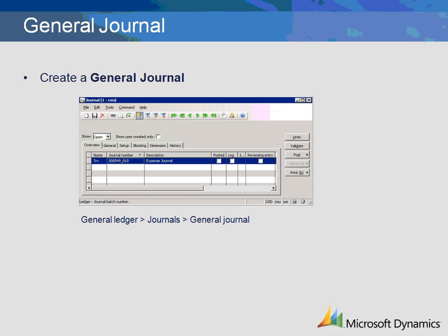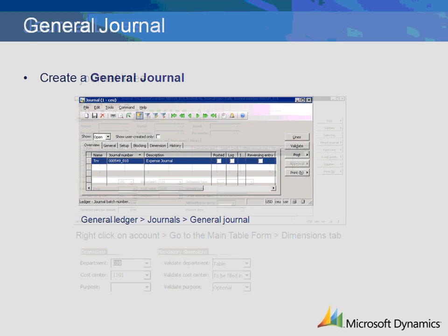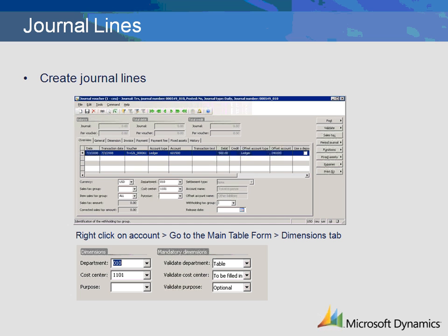We have created a new General Journal and click on the Lines button to enter the details of the first transaction. We have entered a transaction to record travel expense. The travel expense account 601500 has default dimensions specified in the chart of accounts. However, the validation rules are different for each dimension. You will notice that the dimensions set up on the account are defaulted into the transaction.